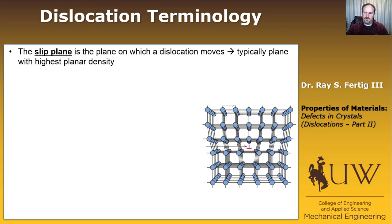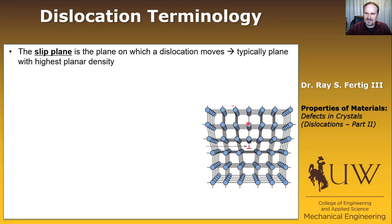As you may remember from the previous lecture, this upside-down T corresponds to the dislocation, and what we're looking at is called an edge dislocation. It basically looks like an extra half plane of atoms sticking up in the middle. The slip plane is the plane that the dislocation moves on, and it's typically the plane with the highest planar density.